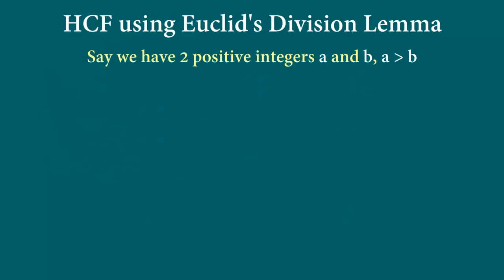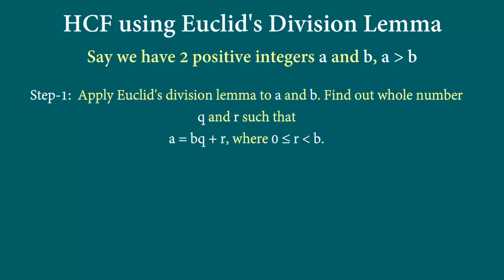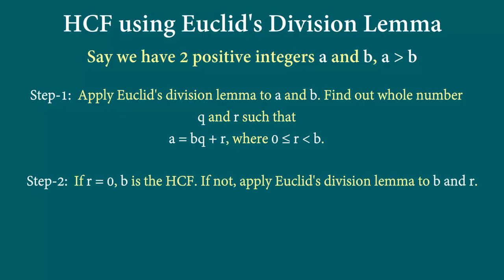Now let's find out how we can use this to calculate HCF. We start with two positive integers a and b where a is greater than b. The first step is to apply Euclid's division lemma to a and b — find the quotient and the remainder. The second step: if the remainder is 0, then b, which is our divisor, is the HCF.